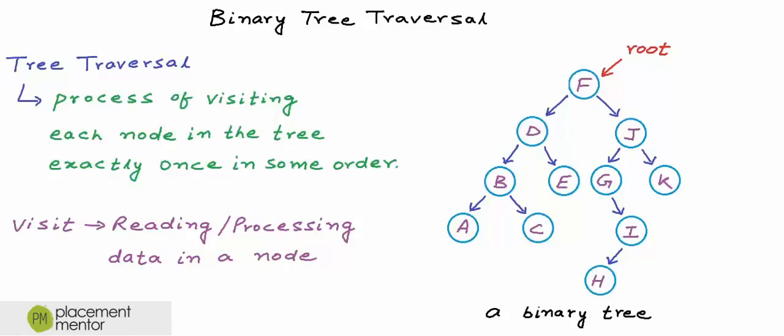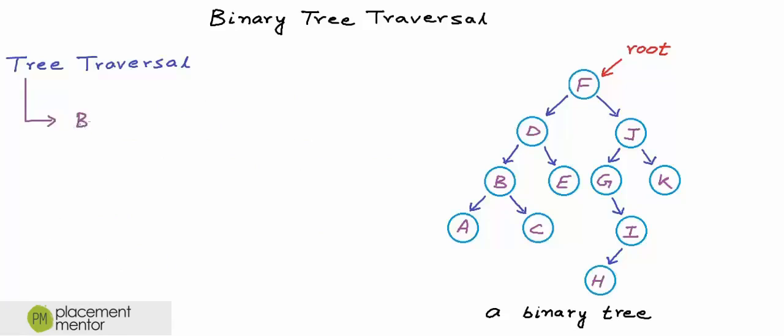Based on the order in which nodes are visited, tree traversal algorithms can broadly be classified into two categories. We can either go breadth first or we can go depth first. Breadth first traversal and depth first traversal are general techniques to traverse or search a graph. Tree is only a special kind of graph, and in this lesson we are going to discuss breadth first and depth first traversal in context of trees.